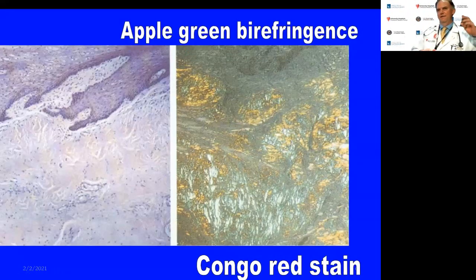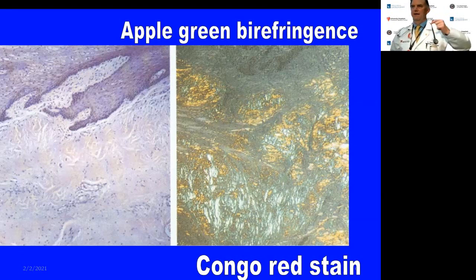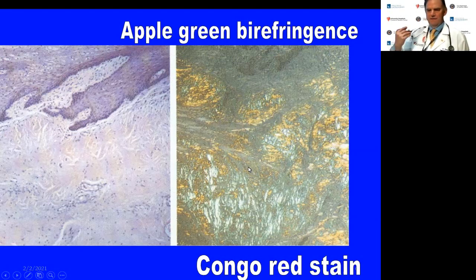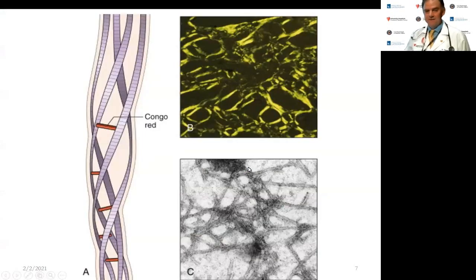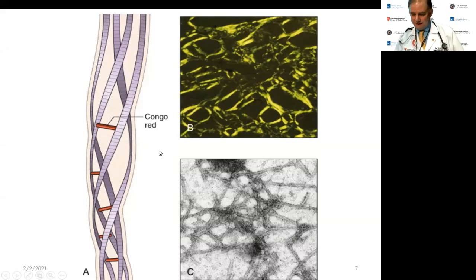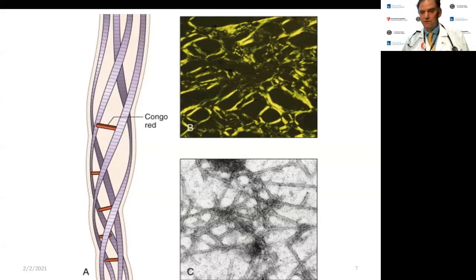All amyloid — whether AL, AA, or TTR — looks like that hyaline amorphous material, and under polarized imaging with Congo red it turns green. The reason is that Congo red intercalates between the beta-pleated sheets, and when you view this through a polarized scope, the wavelength of the light changes and it turns green.